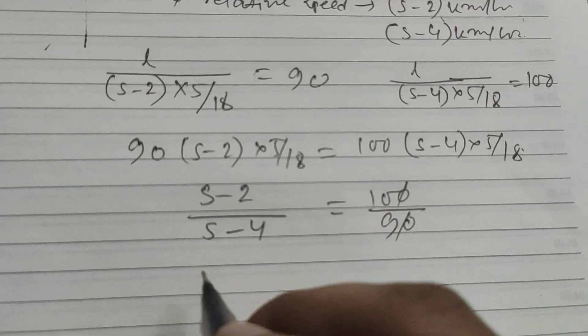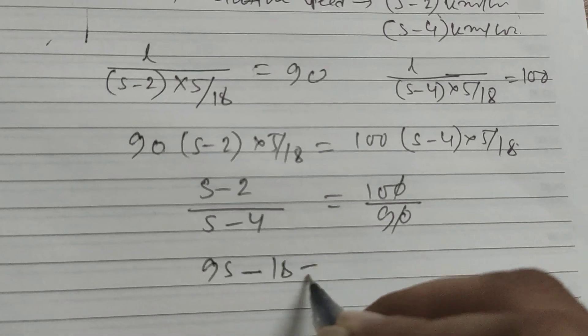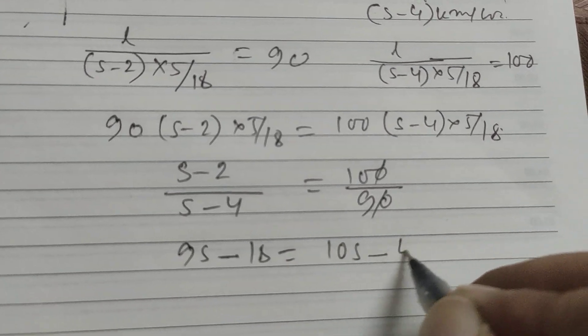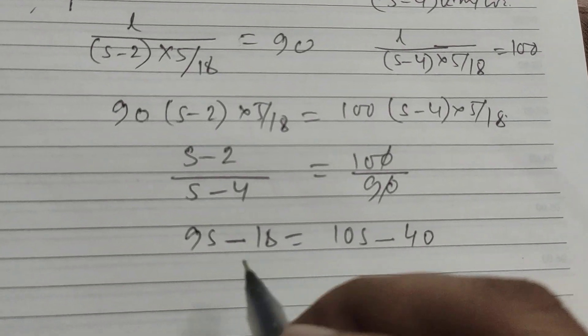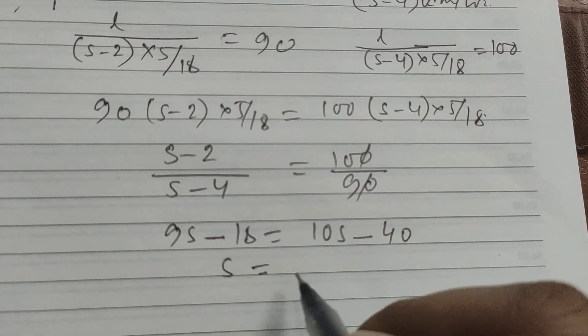9s minus 18 equals 10s minus 40. So s equals 22.